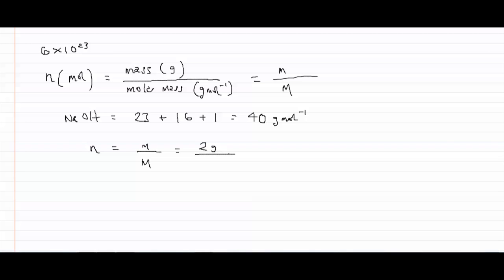Well, we know that the molar mass of sodium hydroxide is 40 grams per mole. So we simply work out that relationship, and we're left with 0.05 moles.